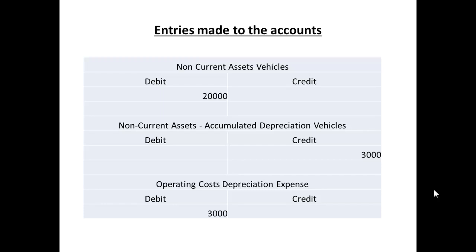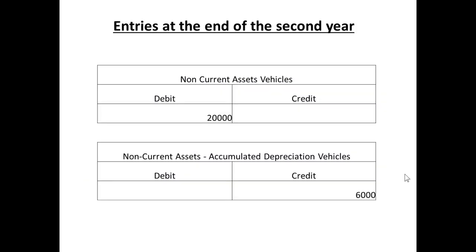Now we need to make the entry to the accounts. The vehicle will originally have been entered in the accounts as a debit to non-current assets of vehicles. We will have an accumulated depreciation of vehicles account in non-current assets, and we will credit that with £3,000. In the operating costs, we will have a depreciation expense account and we will debit that with £3,000. At the end of the second year, the non-current assets debit remains the same, but the accumulated depreciation will now go up to £6,000 because we credit it with another £3,000 — and we also put another £3,000 as a debit to the depreciation expense account.